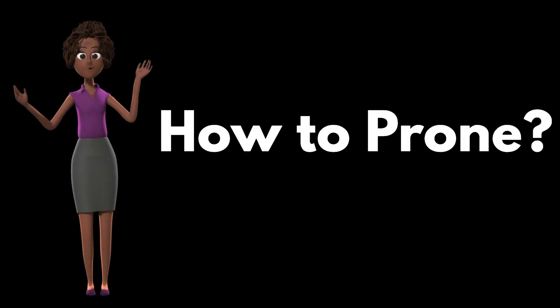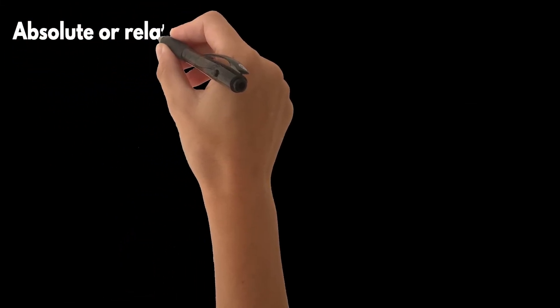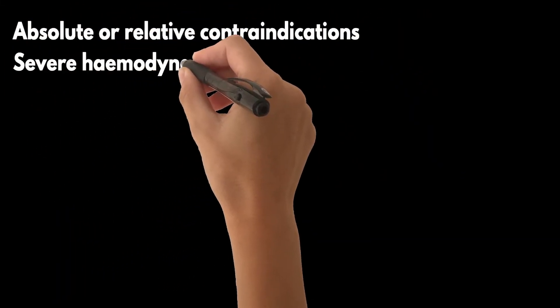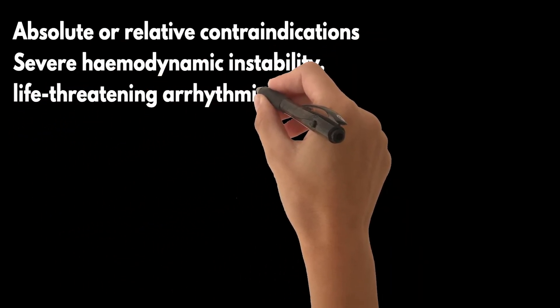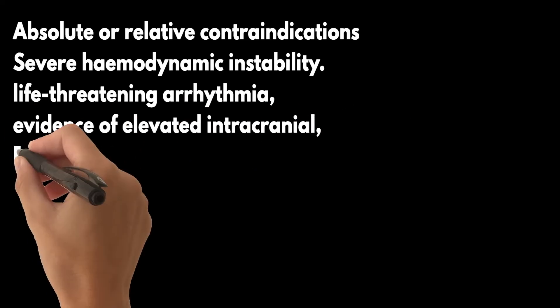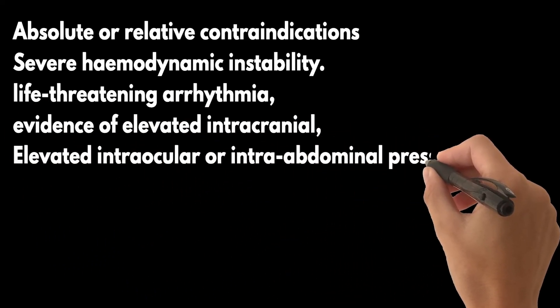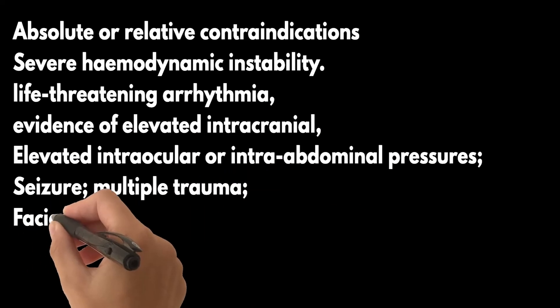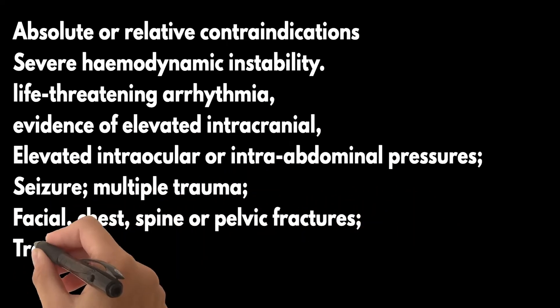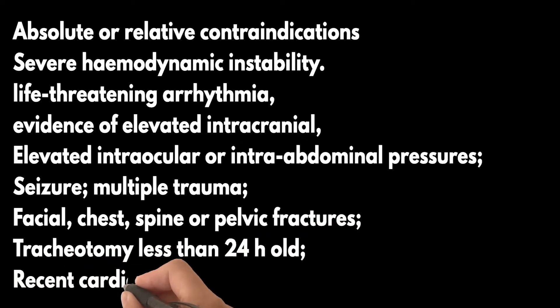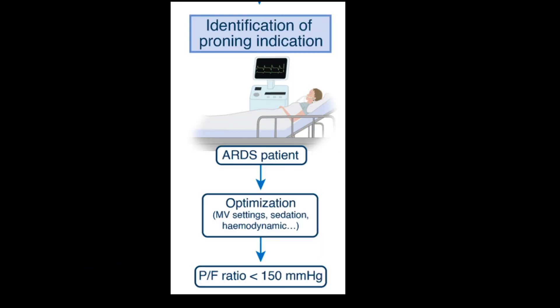How to prone? Absolute or relative contraindications include: severe hemodynamic instability, life-threatening arrhythmia, evidence of elevated intracranial, intraocular, or intra-abdominal pressures, seizure, multiple trauma, facial, chest, spine or pelvic fractures, tracheotomy less than 24 hours old, recent cardiothoracic surgery, and open abdominal wound. The indication is that it should be done early in moderate-to-severe ARDS with persisting hypoxemia after adjusting mechanical ventilation settings and PEEP level. If after stabilization the P/F ratio is still less than 150, we can proceed with proning.